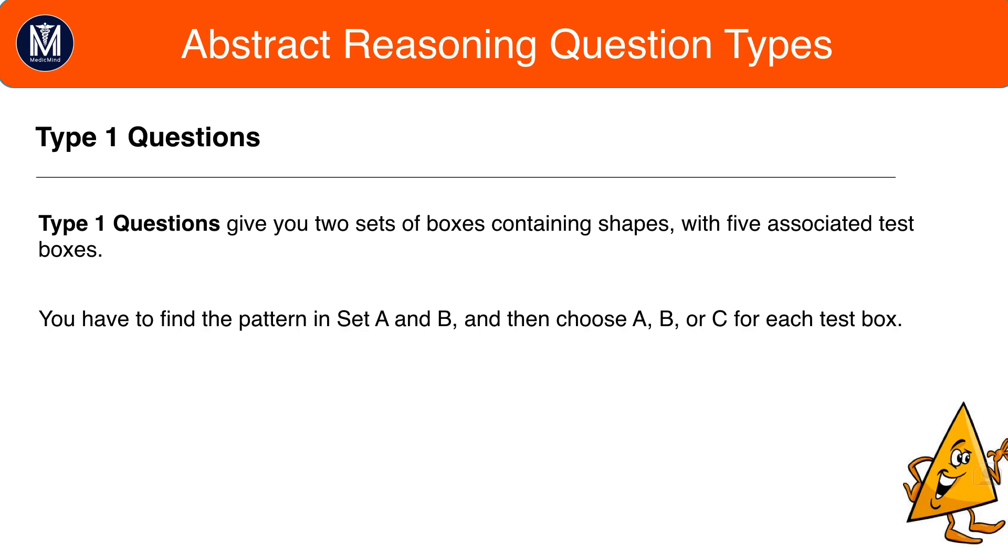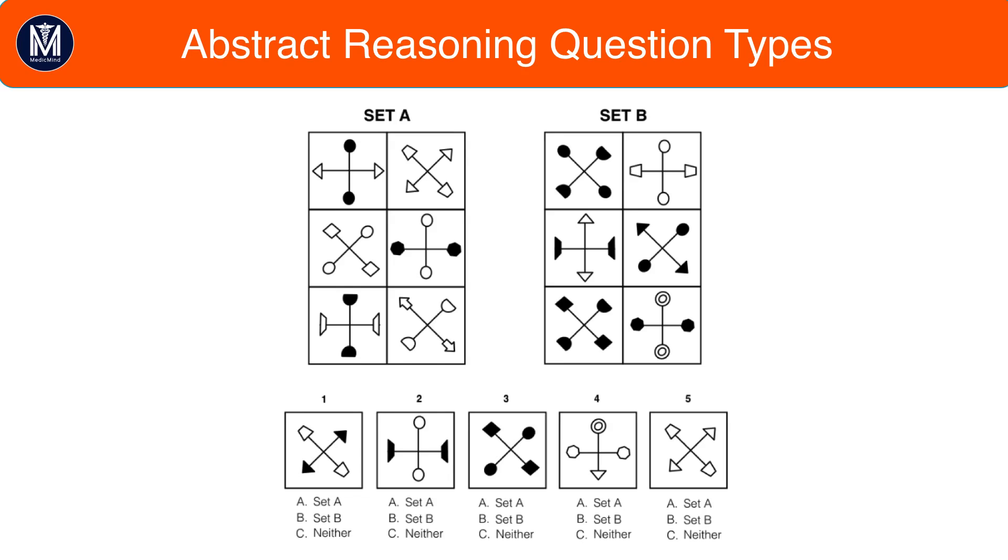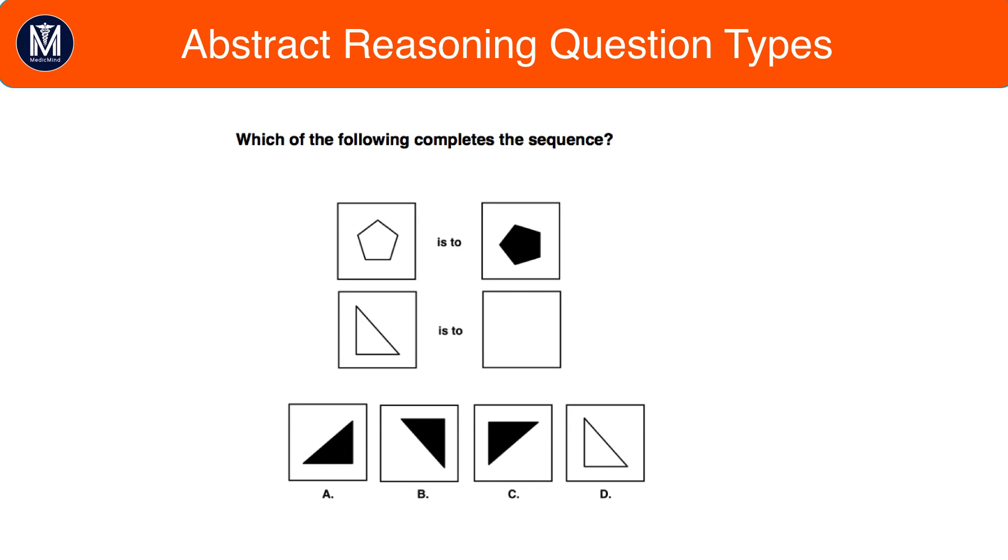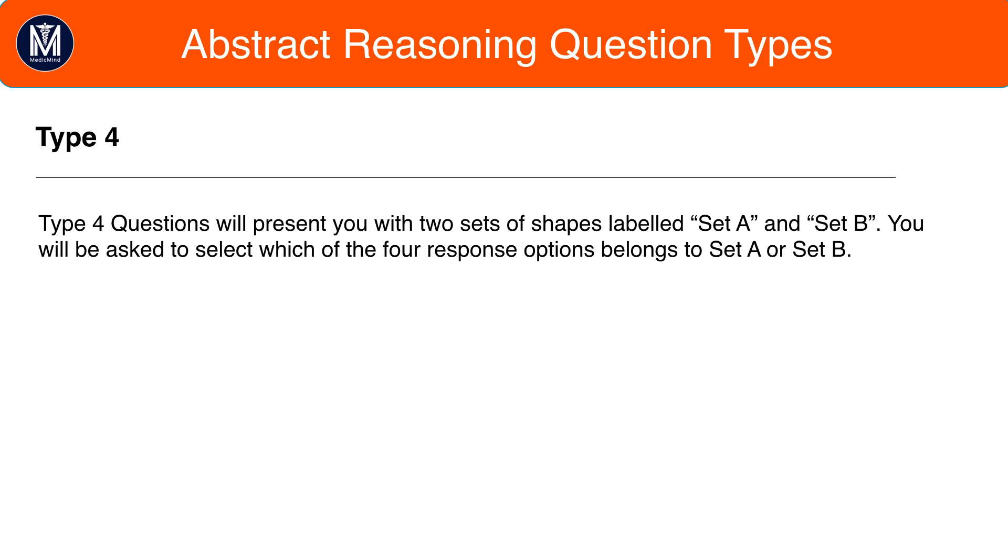To summarize, type 1 questions, we say spend 1 minute on, 40 seconds to find the pattern, 20 seconds to answer the 5 questions. Type 2 and type 3 questions, we say spend around 12 seconds for. And then, type 4 questions.